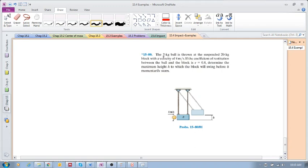We have a 2-kilogram ball thrown at a suspended 20-kilogram block. The ball is thrown at 4 meters per second at the block. The coefficient of restitution between the ball and the block is 0.8. Determine the maximum height to which the block will swing before it momentarily stops.